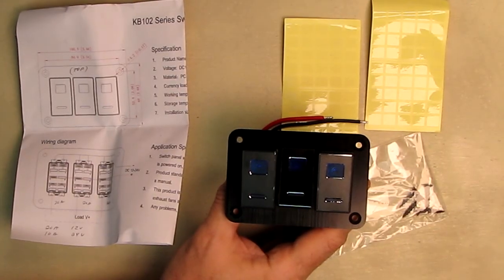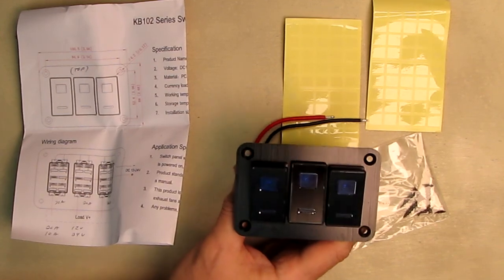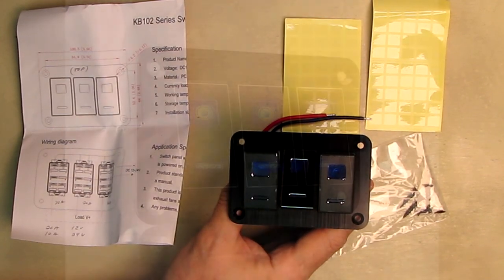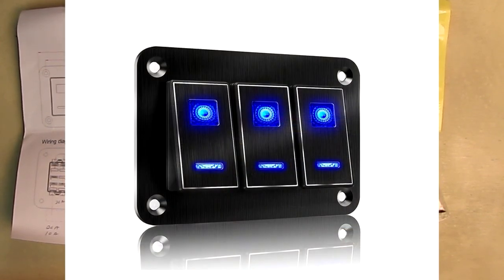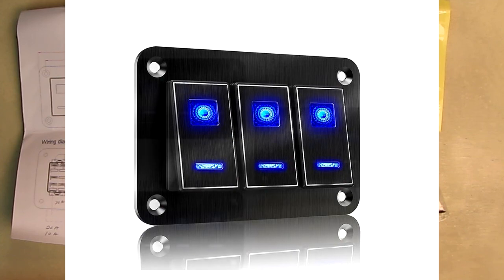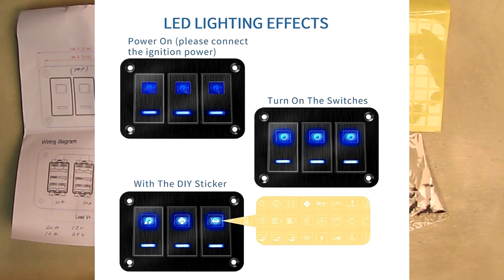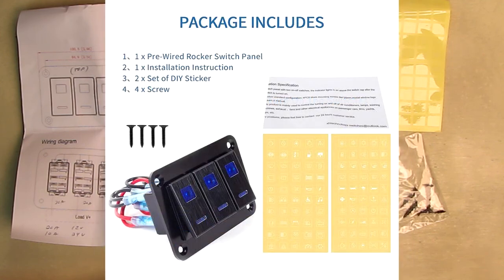Hello again, this is Robert Veach here. This is my video review of a 3-gang rocker switch panel from the company XH Technology. 12 volts or 24 volts. It has 5-pin on-off car switches with blue LED. We're going to show that.